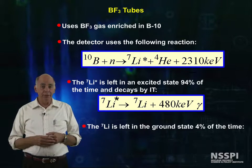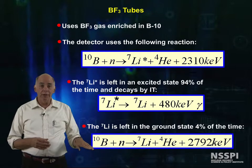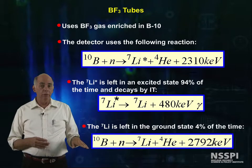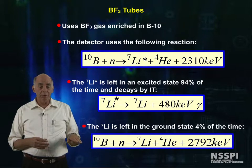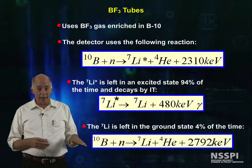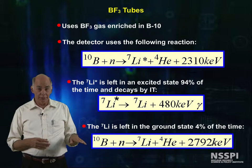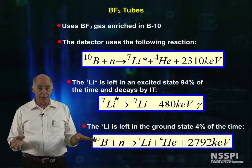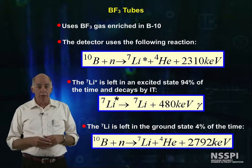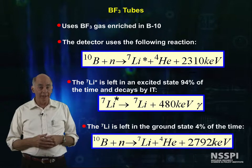6% of the time, the lithium-7 is left in the ground state, and the extra 480 keV appears as extra kinetic energy in the products. The kinetic energy during this 6% decay process is now 2,792 keV.